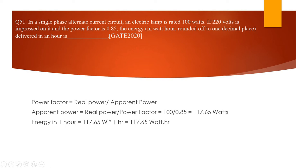The next question is from GATE 2020. In a single-phase alternating current circuit, an electric lamp is rated 100 watts. A voltage of 220 volts is impressed on it and the power factor is 0.85. We need to calculate the energy in watt-hours, rounded to one decimal place, delivered in one hour. We'll use the basic formula: Power Factor = Real Power / Apparent Power.